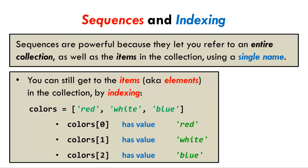The notation is the sequence name, here colors, followed by an open square bracket symbol, followed by a non-negative integer called the index that specifies which item of the sequence is being referenced, followed by a closed square bracket symbol.